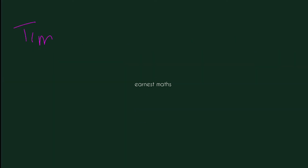Substituting into the formula: time period is equal to 1 divided by frequency, and frequency is equal to 600 hertz. So this gives us 1 divided by 600.